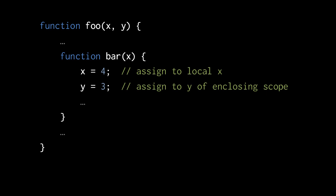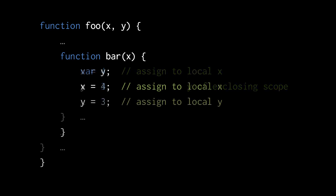Recall how JavaScript treats variables in nested functions. Here in the function bar, the interior function, when we assign to y, the function bar doesn't have its own local variable y, so this must be something from the enclosing scope — in this case y of the immediately enclosing function. If we want y in bar to be a local y, we have to declare it as such with a var statement.